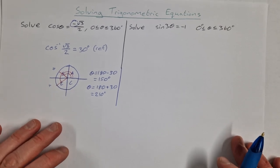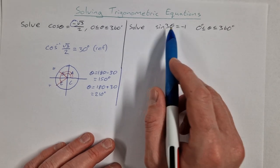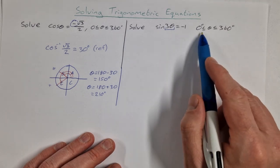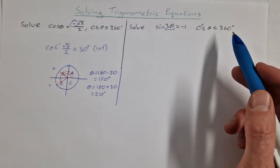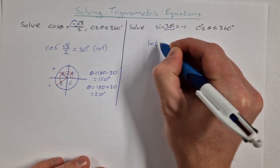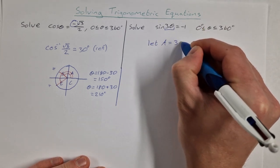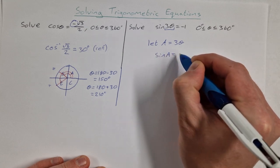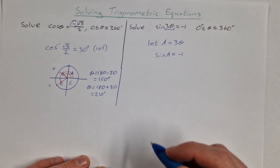For the second one, it's a little different. We have solve sine of 3 theta is equal to minus 1, where theta is between 0 and 360. So to solve this, instead of solving for 3 theta, we let A equal 3 theta and we solve sine of A equal to minus 1.